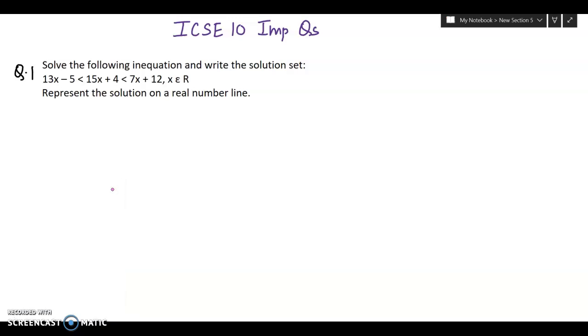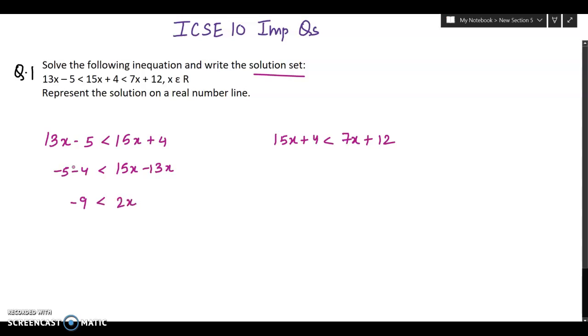Solve the following inequality and write the solution set. The question is 13x minus 5 less than 15x plus 4 less than 7x plus 12. This will be 15x minus 13x and minus 5 minus 4, that is minus 9 less than 2x. So x is greater than minus 9 by 2.